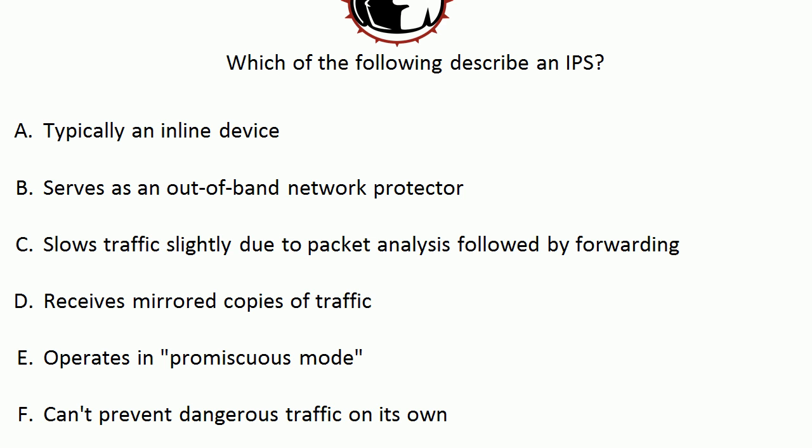Choice F — can't prevent dangerous traffic on its own — also describes an IDS. It can alert another device that something needs to be done, but since it's an out-of-band device, it cannot take direct action on those incoming packets. So the two choices that describe an IPS are: typically an inline device, and slows traffic slightly due to packet analysis. The IDS serves as an out-of-band network protector, gets mirrored copies of traffic, operates in promiscuous mode, and cannot prevent dangerous traffic on its own.